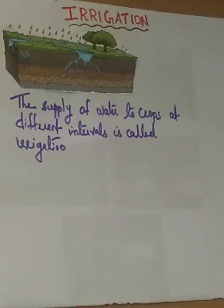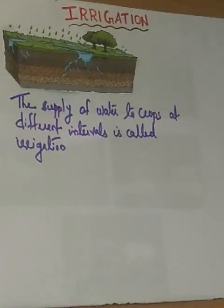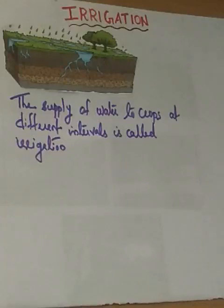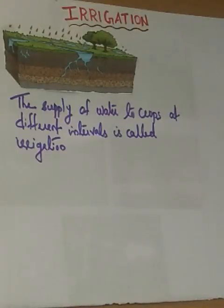Water is important for the germination of seeds and for the proper growth and development of flowers, fruits and seeds of the plants. Along with water, minerals and fertilizers are also absorbed by the roots of the plants. For the absorption of fertilizers and minerals from the soil, water helps the plants get all these nutrients in dissolved form.